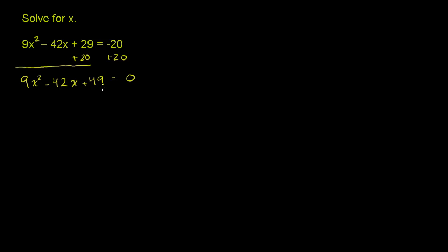but something might immediately pop out at you. When you see numbers like 9 and 49, those are perfect squares. So maybe this whole expression is a perfect square of some binomial.